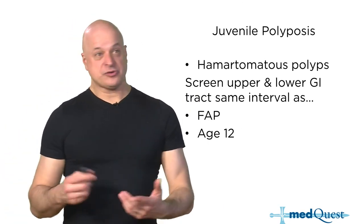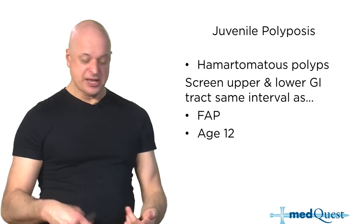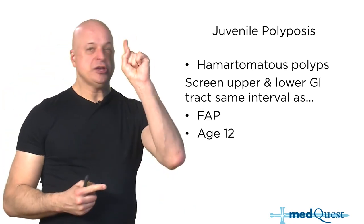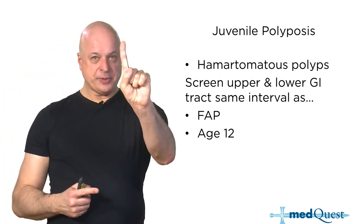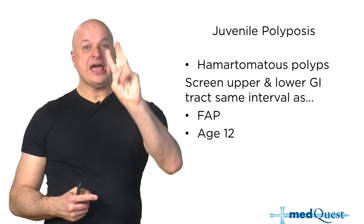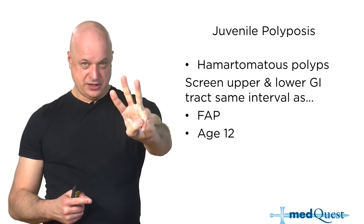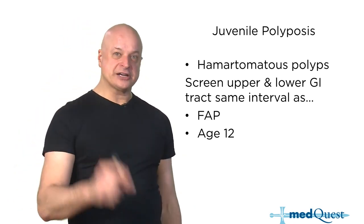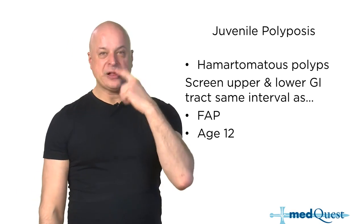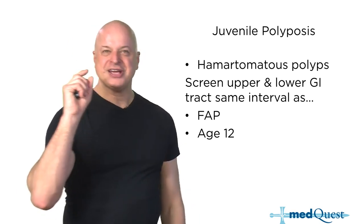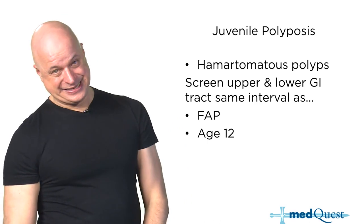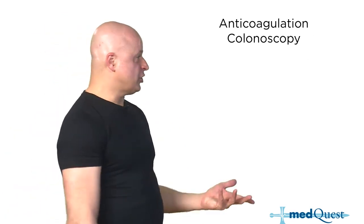To summarize the syndromes: juvenile polyposis, Gardner's, and FAP all screen at age 12 with sigmoidoscopy; Peutz-Jeghers starts at age 8. If you're not sure what to do, say age 12.